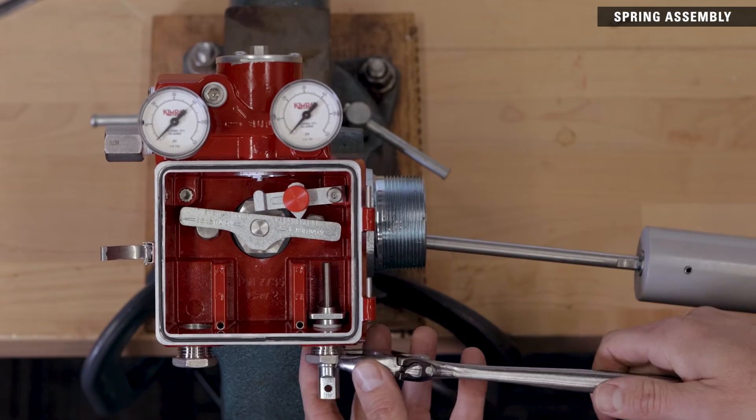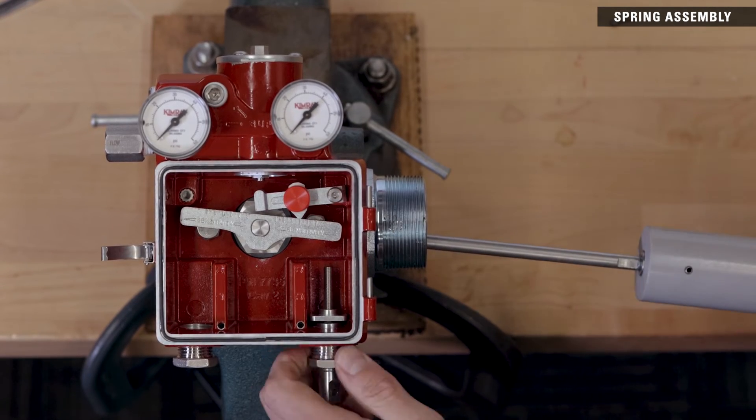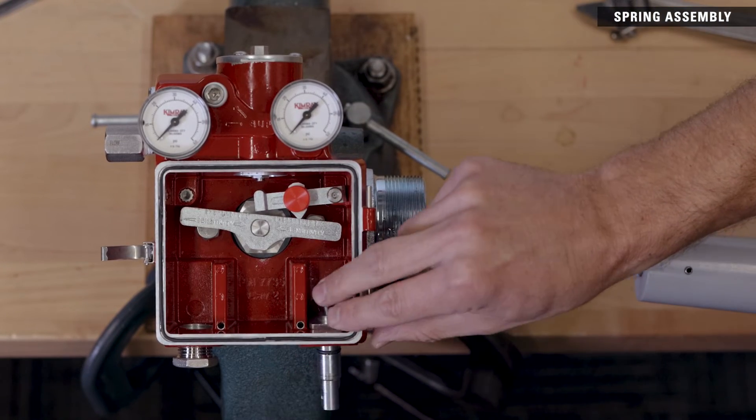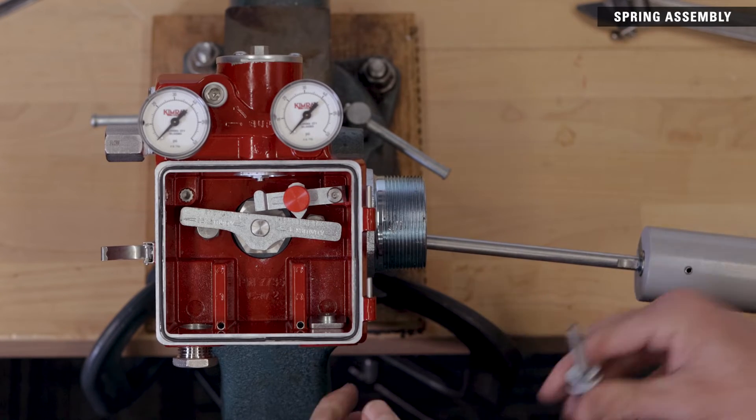Remove the half inch NPT spring bushing with a 15-16ths inch wrench or adjustable wrench. Unthread the spring assembly from the lower spring plate and remove it from the enclosure.